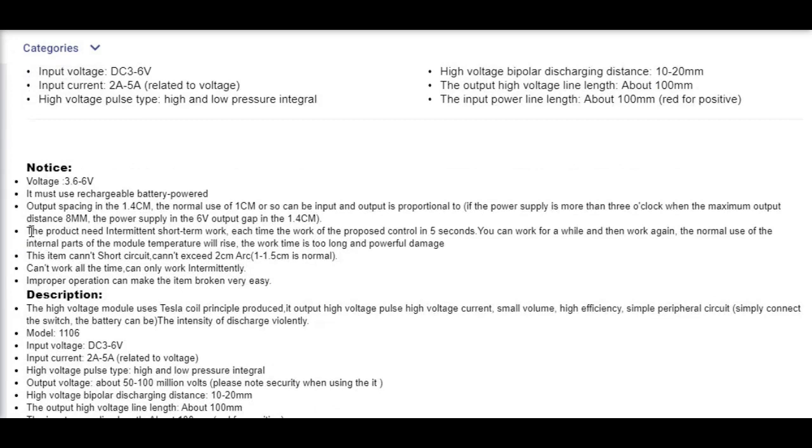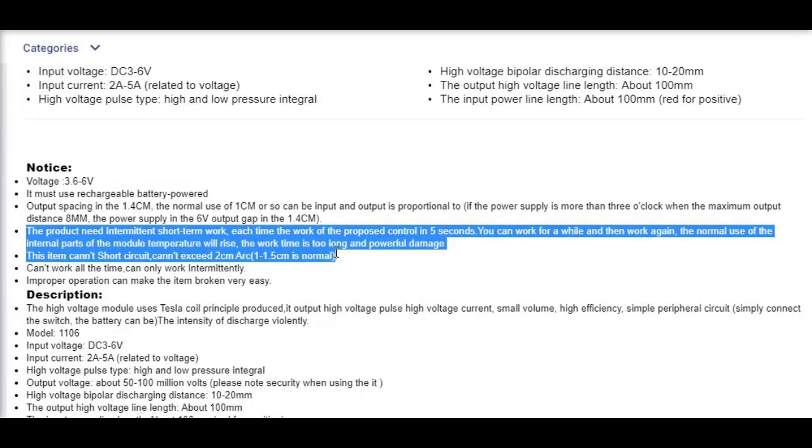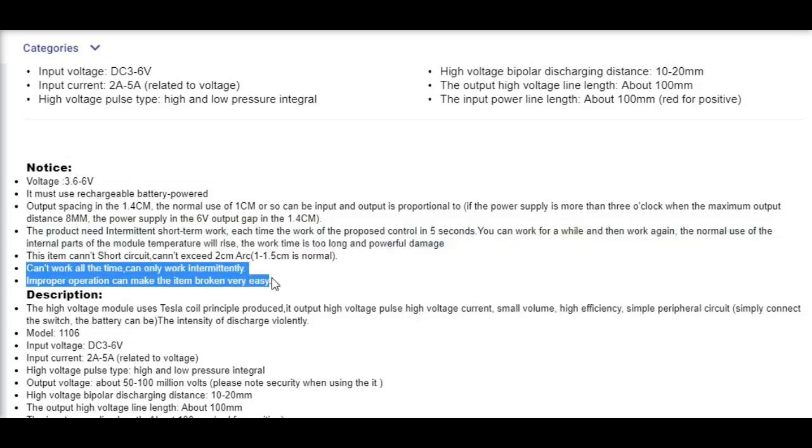Here it says the product needs intermittent short-term work of only 5 seconds, otherwise it may overheat. And as it says here, this item can be easily broken, which is very true. So basically, this high voltage module sucks at powder coating application.